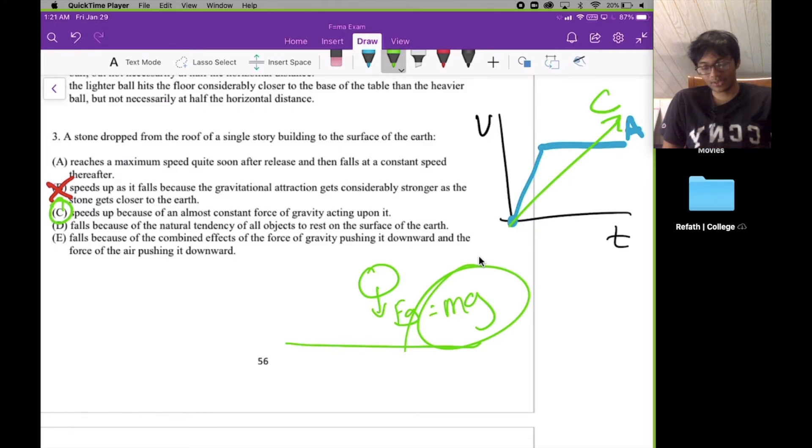Let's take a look at the other choices just for fun. Choice D: the object falls because of a natural tendency of all objects to rest on the surface of the earth. That's what Aristotle said, that objects have a natural tendency, but balls don't have brains basically, so they don't have any natural tendencies. Aristotle was wrong there, and that's why choice D is wrong.